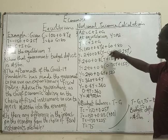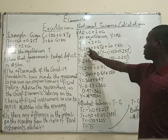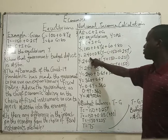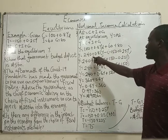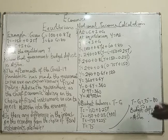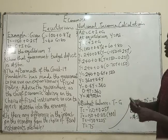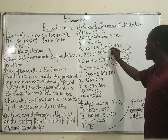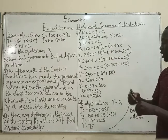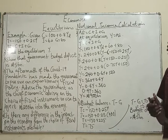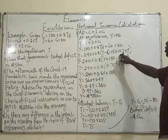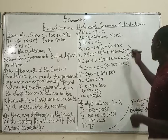Investment is 60 and government spending is 80. Summing the constants: 100 plus 60 is 160, plus 80 is 240, so we have 240 plus 0.8 times YD. Now YD is Y minus tax, but the tax has a function — it's not just an absolute number. The tax function is minus 150 plus 0.25Y, so YD equals Y minus open bracket minus 150 plus 0.25Y close bracket.